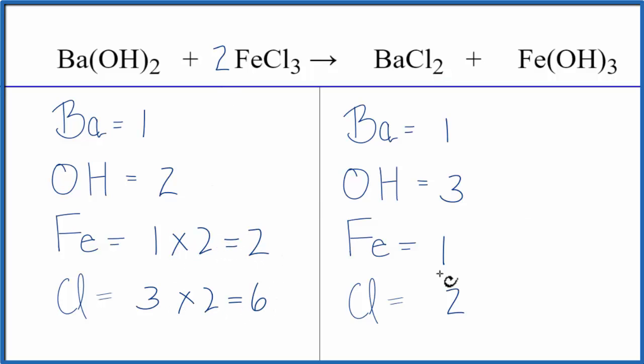But now I can come over on this side of the equation here, and to get six chlorines here to balance this six, I can put a three in front of the BaCl2. So I have two times three, that gives me six. And then for barium, I have the one times the three, so that gives me three of those.